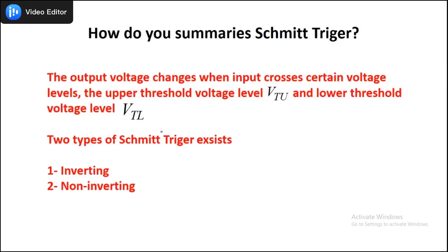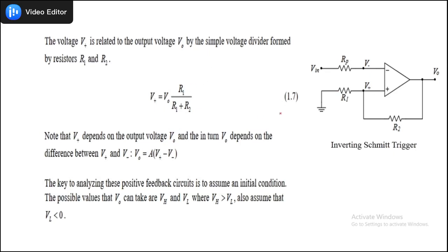To summarize the Schmitt trigger: the output voltage changes with respect to the input when the input crosses certain voltage levels. These are the upper threshold voltage, termed VTU, and the lower threshold voltage, termed VTL. Whenever the input crosses these two values VTU and VTL, the output of the circuit will change. There are two types of Schmitt trigger: inverting and non-inverting. The focus should be on the feedback component when drawing the circuit.